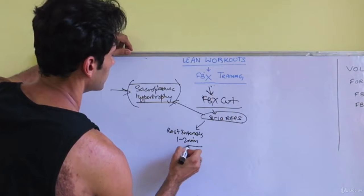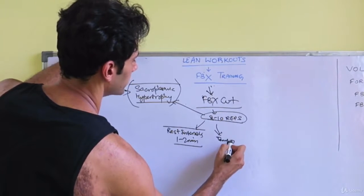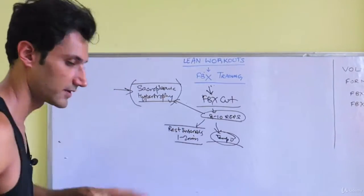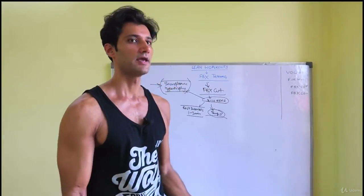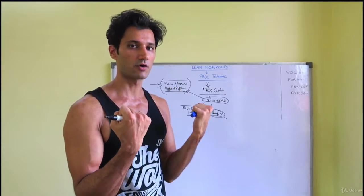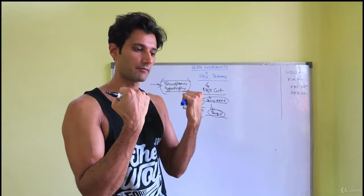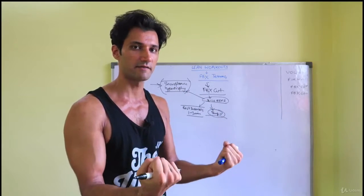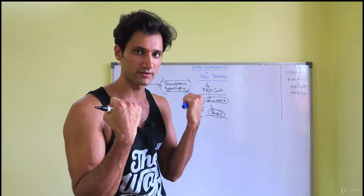Rest intervals will be between one and two minutes. At the same time, the tempo—what is a tempo? A lot of people are asking about this. Tempo is, for example, if I'm doing a bicep curl and I'm coming up, this is your concentric phase. I'm holding it, this is my isometric phase. Then I'm lowering it, this is my eccentric phase. So the amount of time it takes you to do one repetition, that is the tempo of a rep.